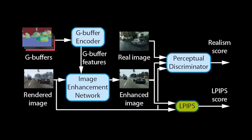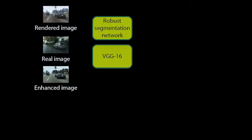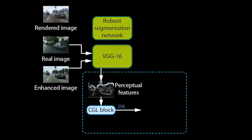Let us now look at how the perceptual discriminator works. The discriminator contains a robust semantic segmentation network and a network for extracting perceptual features — in this case, a VGG-16. We extract features from the VGG at multiple levels and pass them through a convolutional network. This differs from prior work that trains discriminators directly on images. Training on VGG features allows our network to quickly learn a model of realism at multiple perceptual levels.